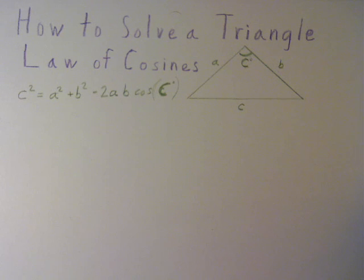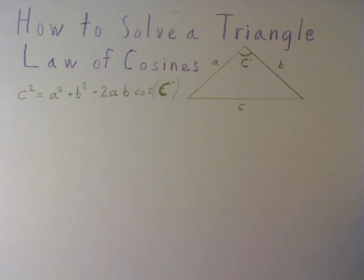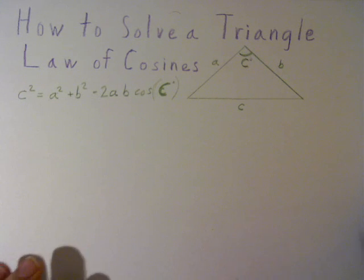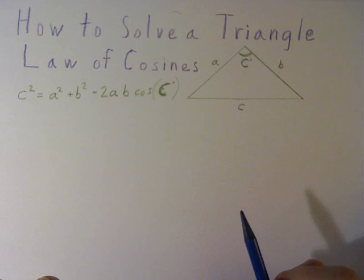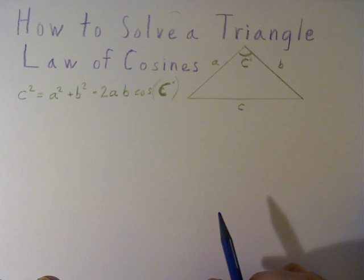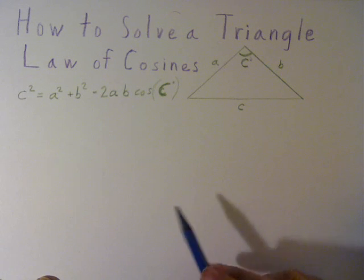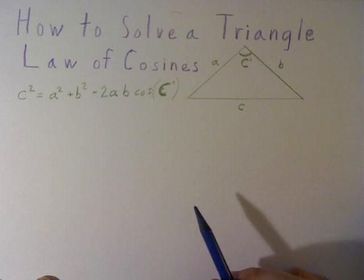In this problem, we're going to look at how to solve a triangle using the law of cosines. With the law of cosines, we can either know two sides and an angle to solve it, or we can know all three sides and solve for the angles.